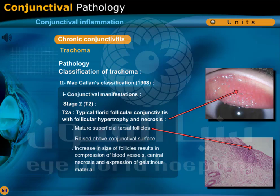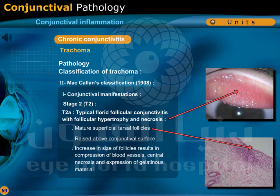Mature superficial tarsal follicles are present, raised above the conjunctival surface. Increasing size of follicles results in compression of blood vessels, central necrosis, and expression of gelatinous material. T2: limbal keratitis and vascular pannus formation.